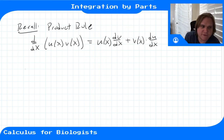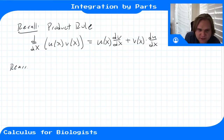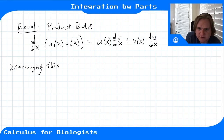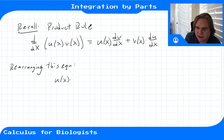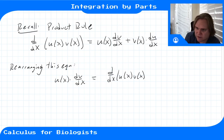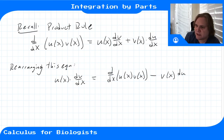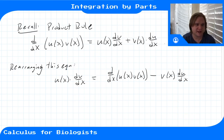If we rearrange this product rule, we can derive a rule for integration. Rearranging the equation, we put u(x) times dv/dx on the left and everything else on the right, giving us u(x) times dv/dx equals the derivative of u·v minus v(x) times du/dx — basically just subtracting that term from both sides of the equation.